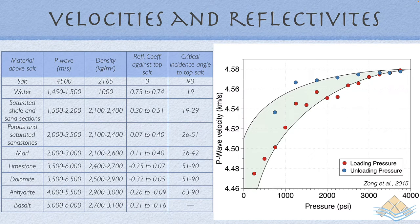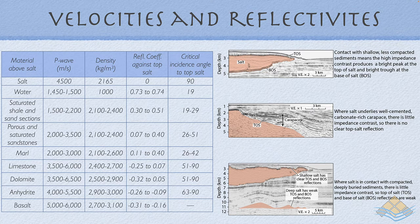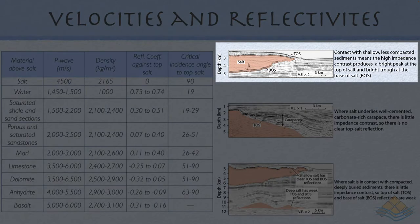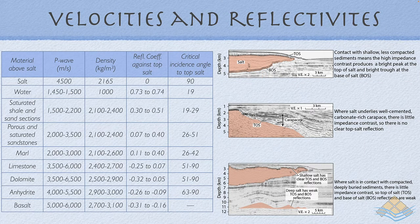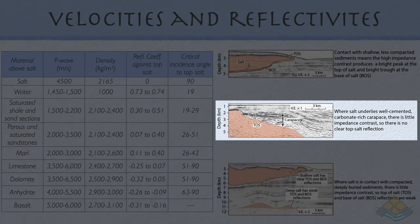Looking at salt's acoustic properties: it has a velocity of around 4,500 meters per second and a density of around 2.2, and it maintains those properties throughout the diagenetic realm, with velocity increasing slightly with pressure and hence with depth. This contrasts with the porous, unconsolidated sediments that typically overlie salt masses. The contact with these less compacted sediments with inherently lower velocities creates a high impedance contrast, producing bright peaks at the top of salt. However, where salt is underlain by a well-cemented carbonate with velocities approaching those of salt, there is little impedance contrast and no clear top-of-salt reflection.